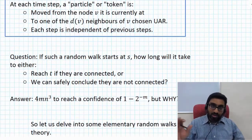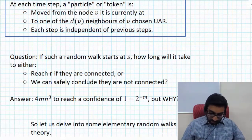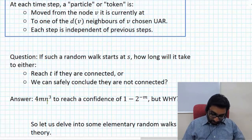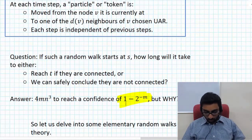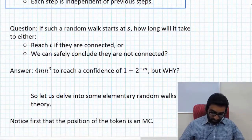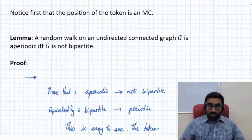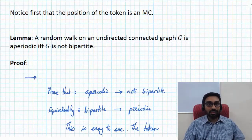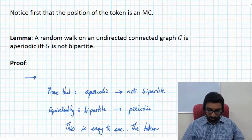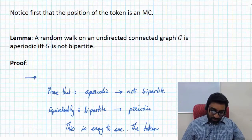We want to find the amount of time for which the random walk should run before we can safely conclude whether s and t are connected or not. As it turns out, that number of steps is 4mn³ in order to get a confidence of 1 − 2^(−m). The position of the token can be thought of as a Markov chain with n states, each state corresponding to a vertex.